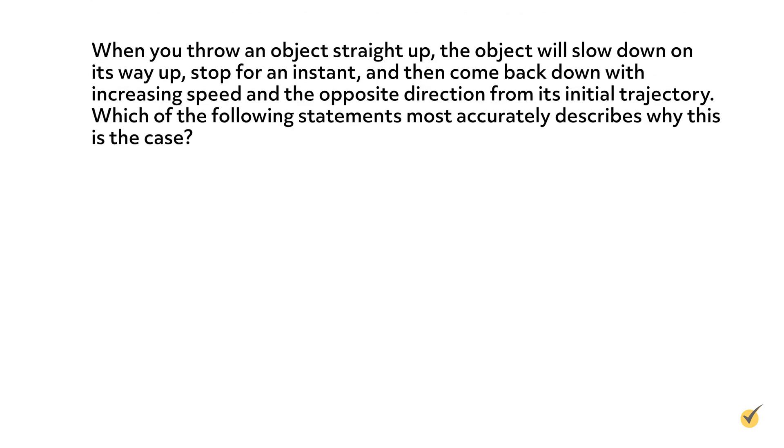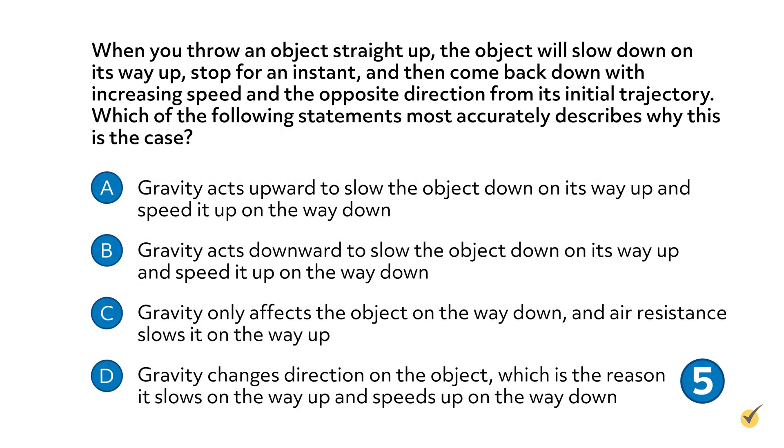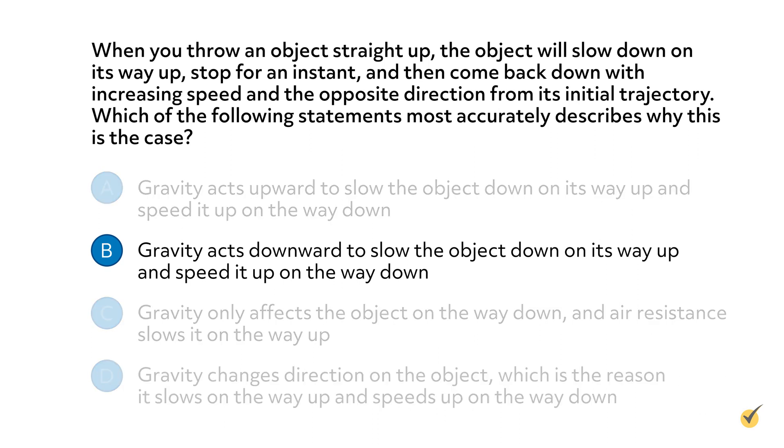Number two, when you throw an object straight up, the object will slow down on its way up, stop for an instant, and then come back down with increasing speed in the opposite direction from its initial trajectory. Which of the following statements most accurately describes why this is the case? The correct answer is B.